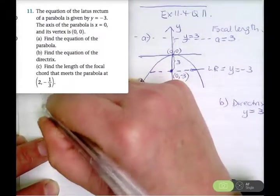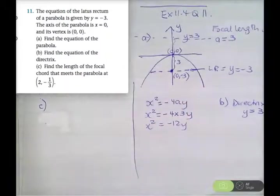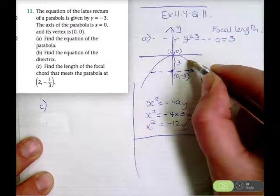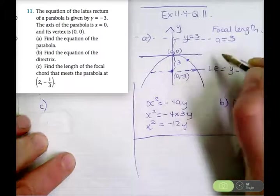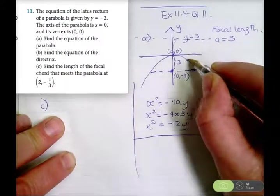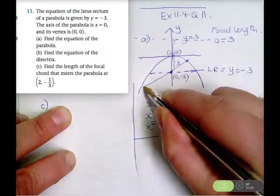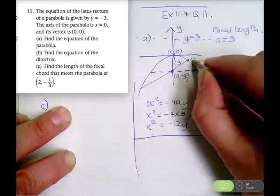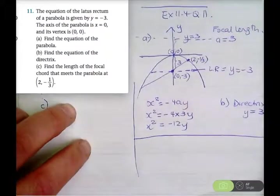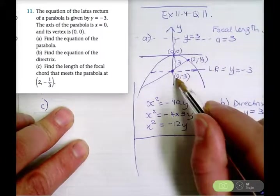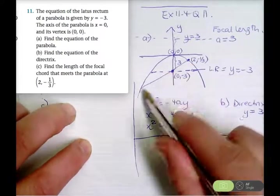Now for part C, we have to find the length of the focal chord that meets the parabola at the point (2, negative 1 third). This point is approximately here on the sketch. The focal chord passes through the focus at (0, negative 3). So I could find the equation of the focal chord using these two points: (2, negative 1 third) and (0, negative 3).